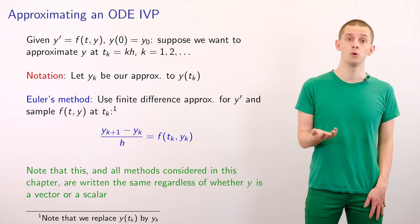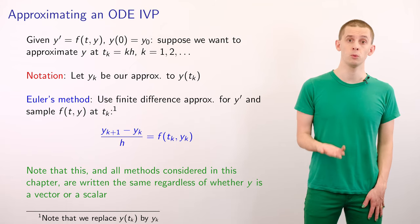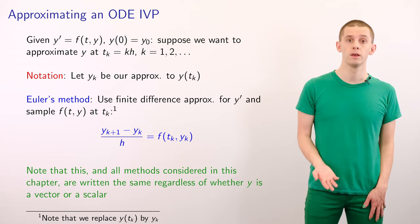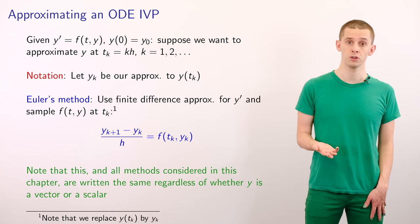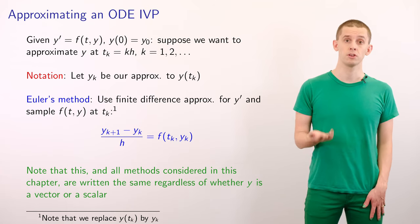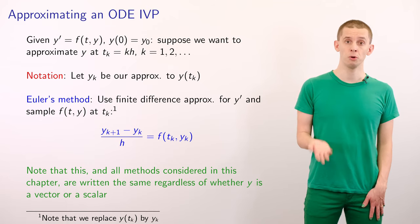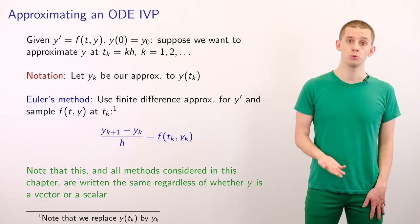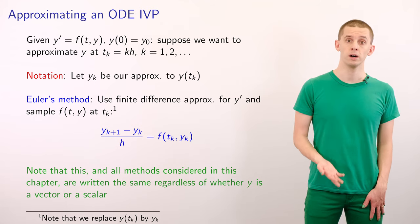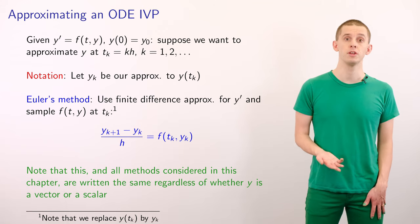Let's begin with the general form for our ODE initial value problem, that y prime is equal to f of t and y, with initial data that y of 0 is equal to y subscript 0. And suppose we want to numerically approximate the solution to this differential equation at time points tk equal to k times h, where h is a small step size and k is equal to 1, 2, 3 and so on.